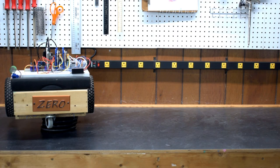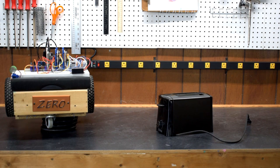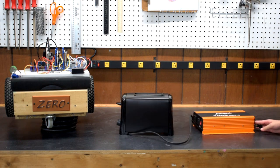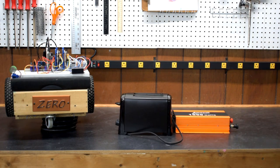In order to give Zero toaster powers, we will need a toaster like this one, and an inverter, and a battery.